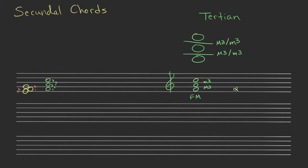If we switch those and do a minor third on the bottom followed by a major third, this gives us F minor — we put an A flat there to get the minor third and then a major third. Then if we flatten both intervals to minor thirds, that gives us F diminished. And finally, F, A, and C sharp — a major third followed by a major third — gives us F augmented.